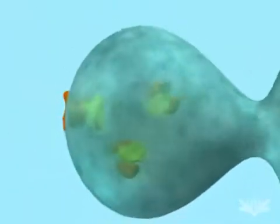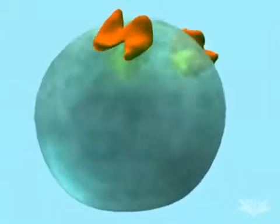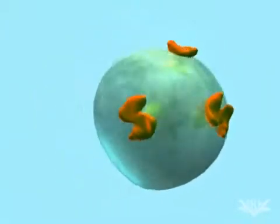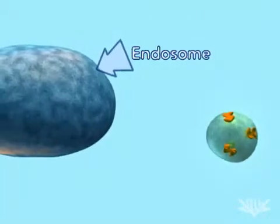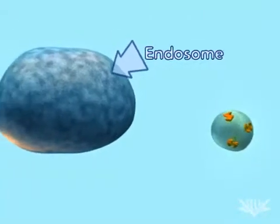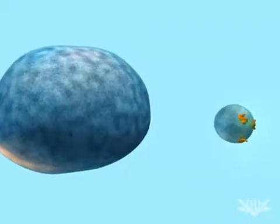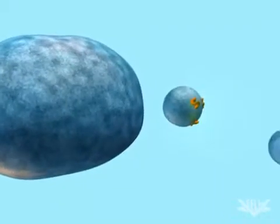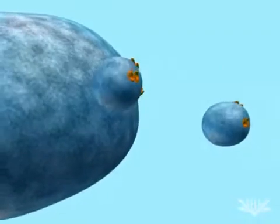Next, a vesicle containing the hydrolase buds off from the trans-Golgi and moves to the endosome. Endosomes eventually mature into lysosomes. Other proteins have different sugar sidechains, and they are delivered to other cellular locations, or to the cell membrane where they are embedded or secreted.